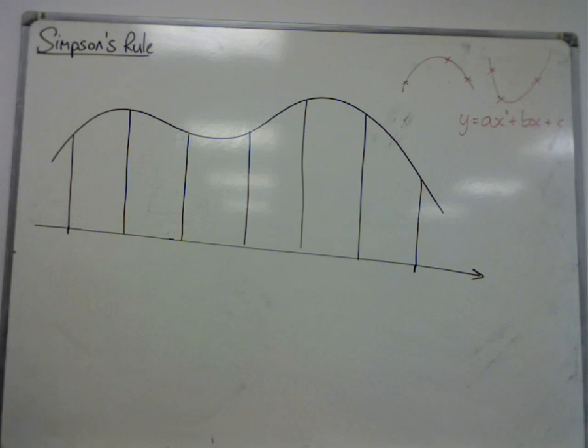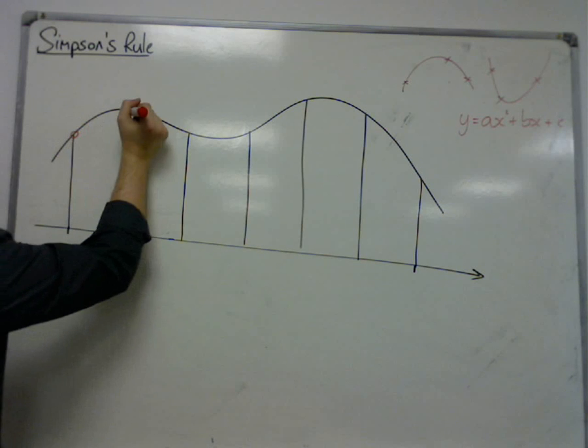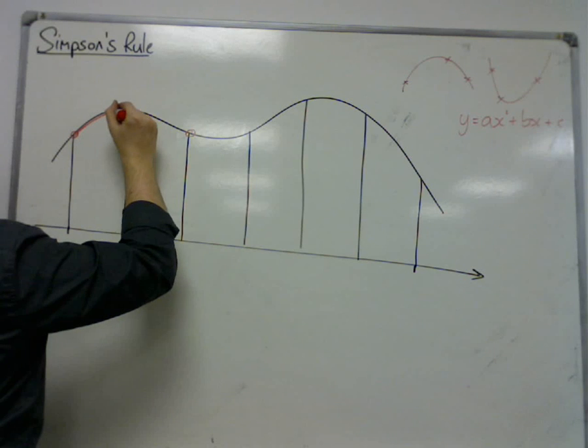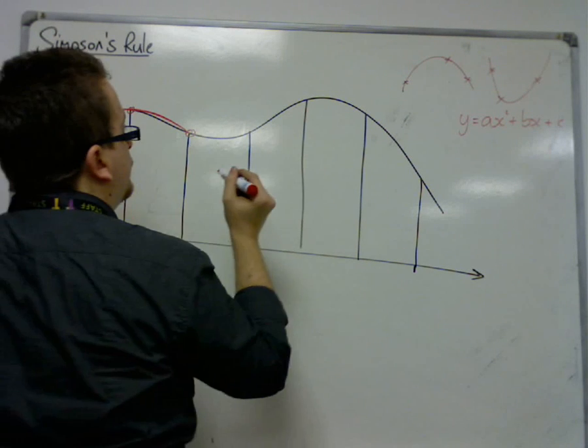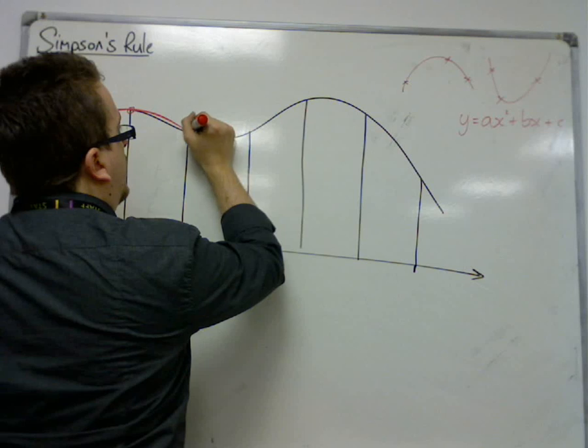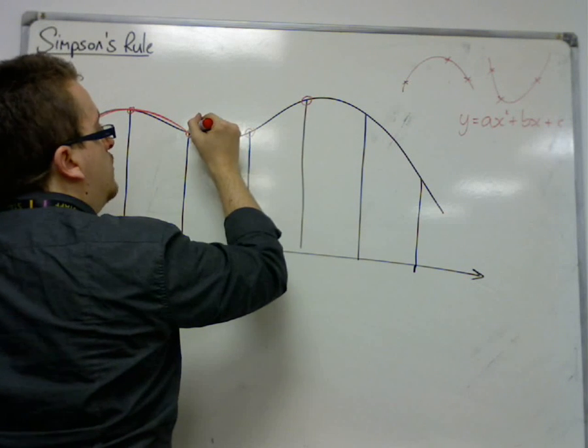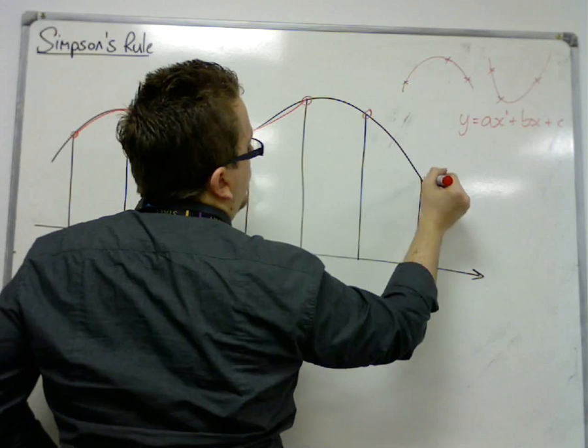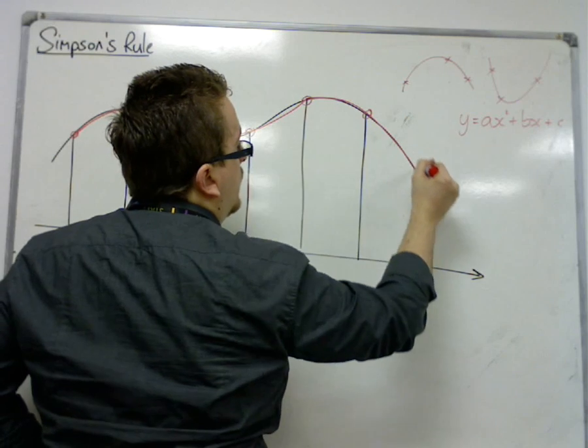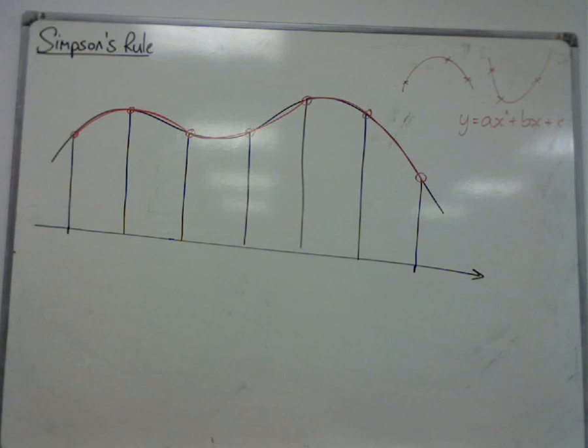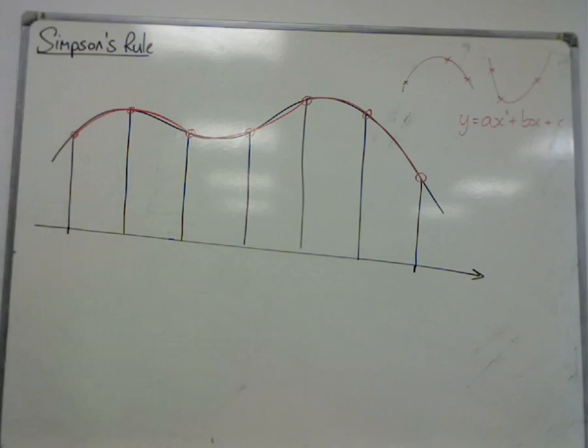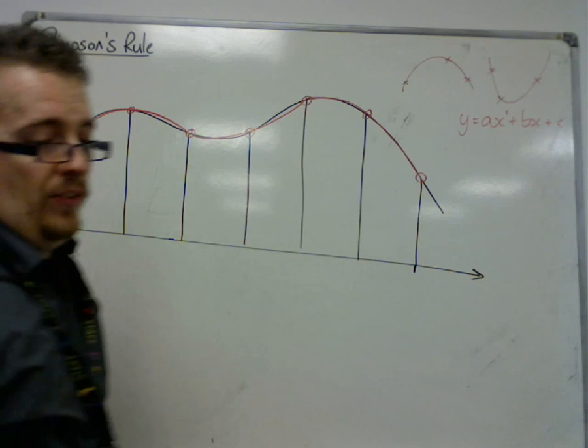If we come back to this example, what we could do is we could take each three points, so those three points, and find the parabola that goes through them. Then we could have those three points here, and find the parabola that goes through them. And you get a curve, almost, that looks a little bit closer than straight lines would give. So this is the idea.